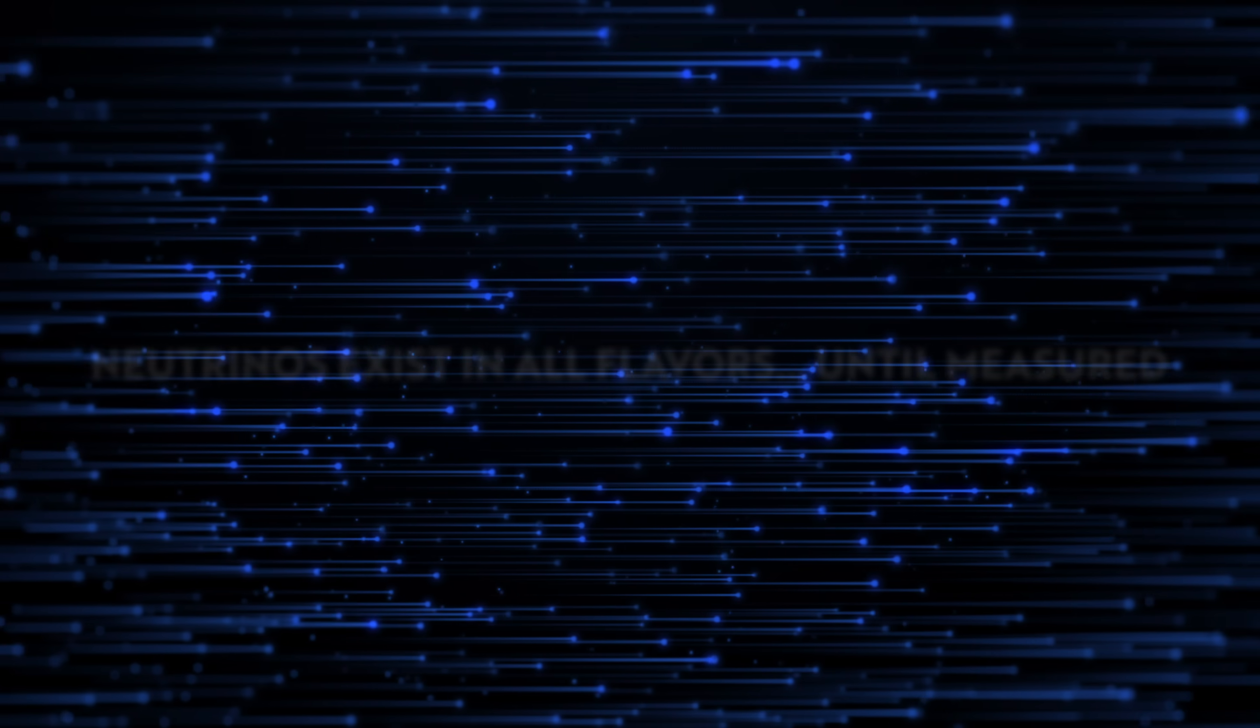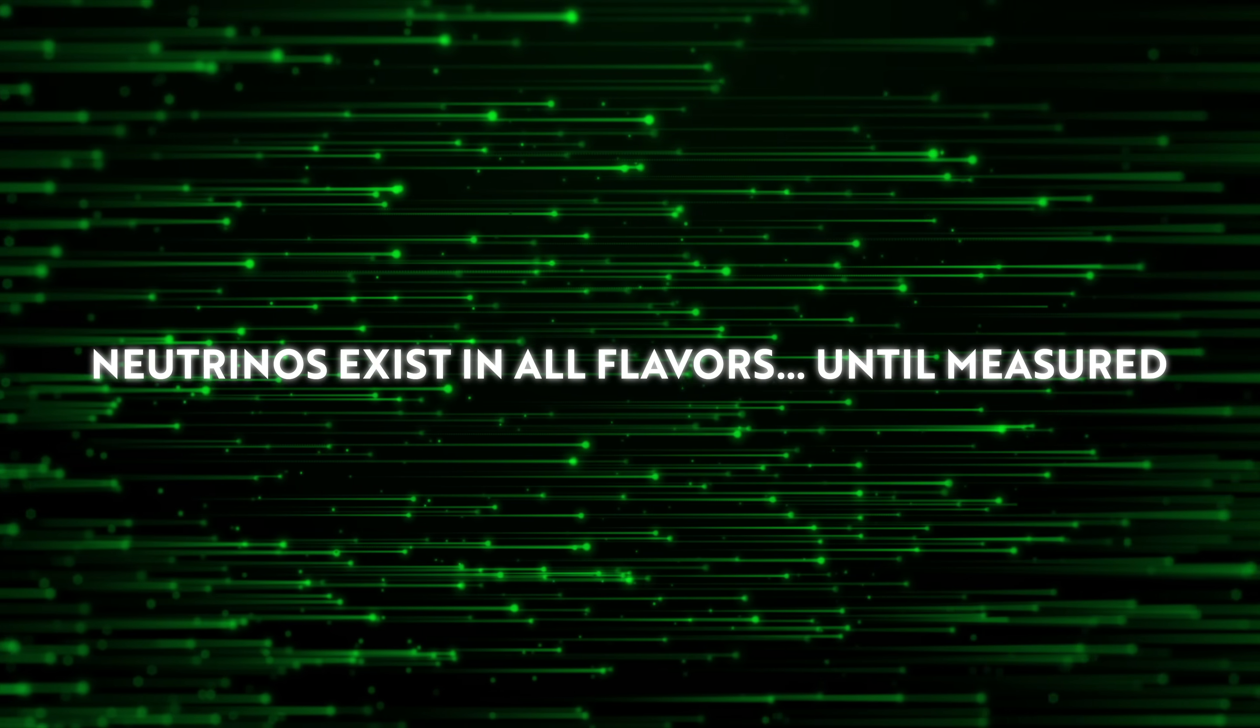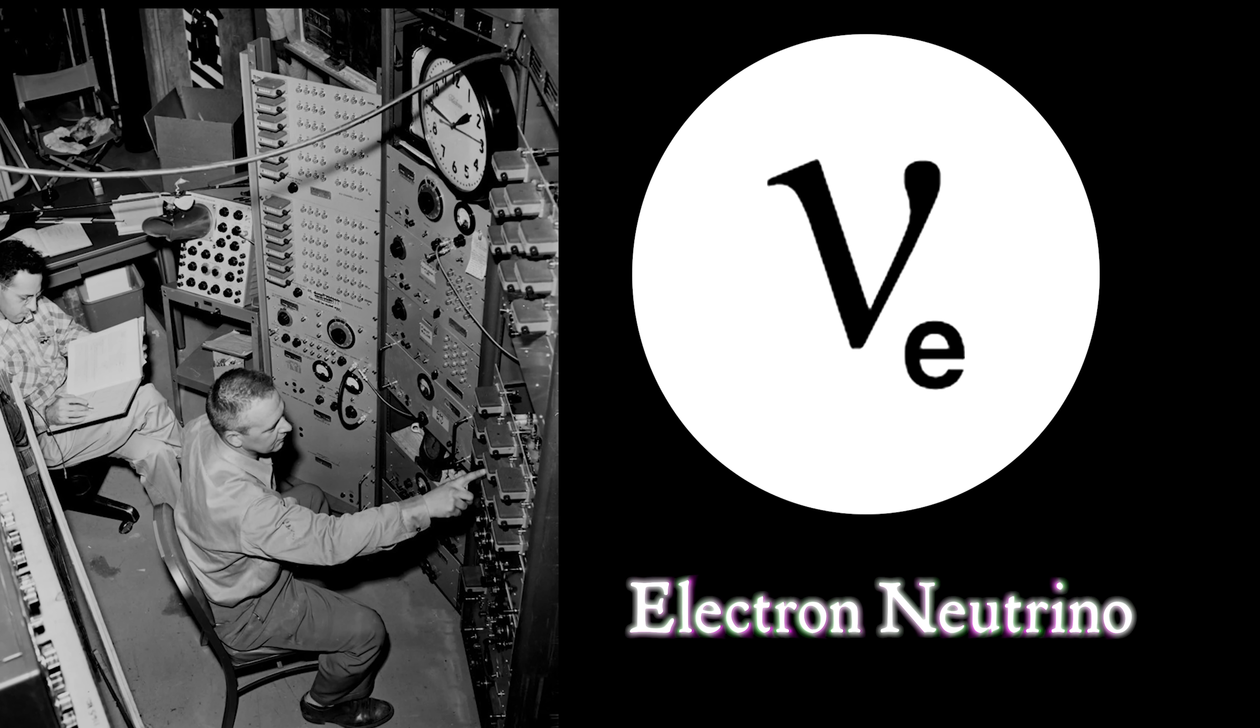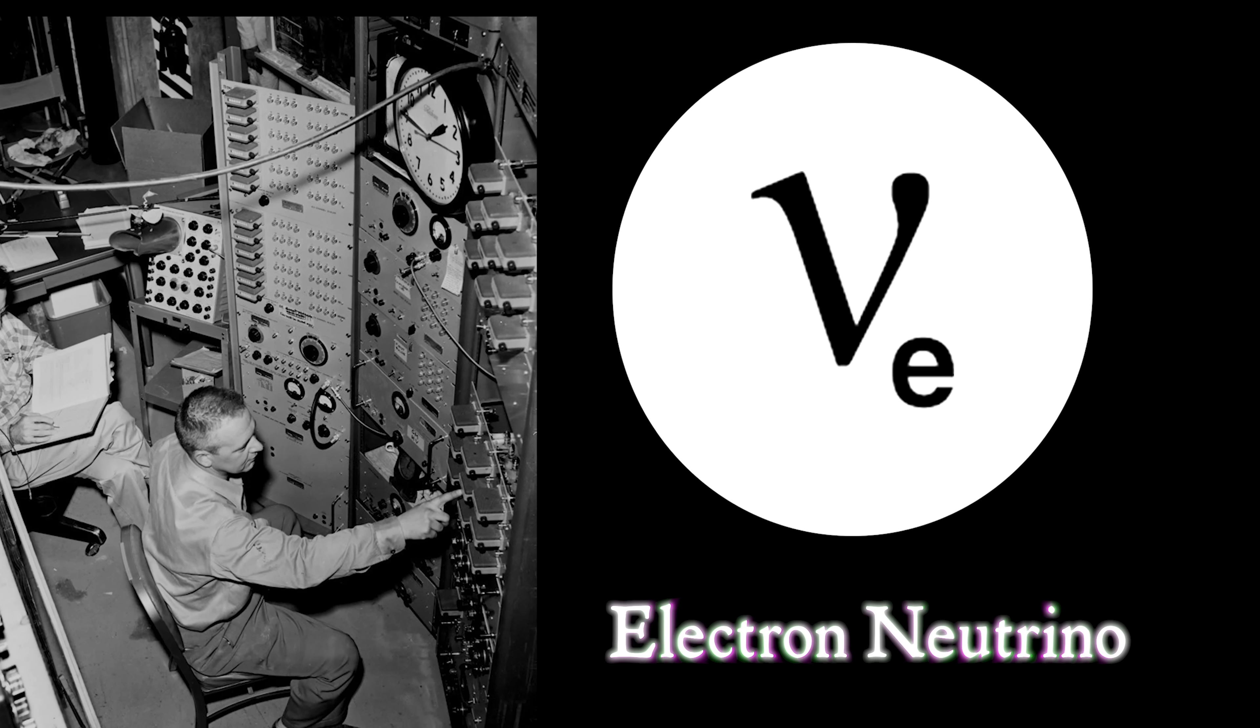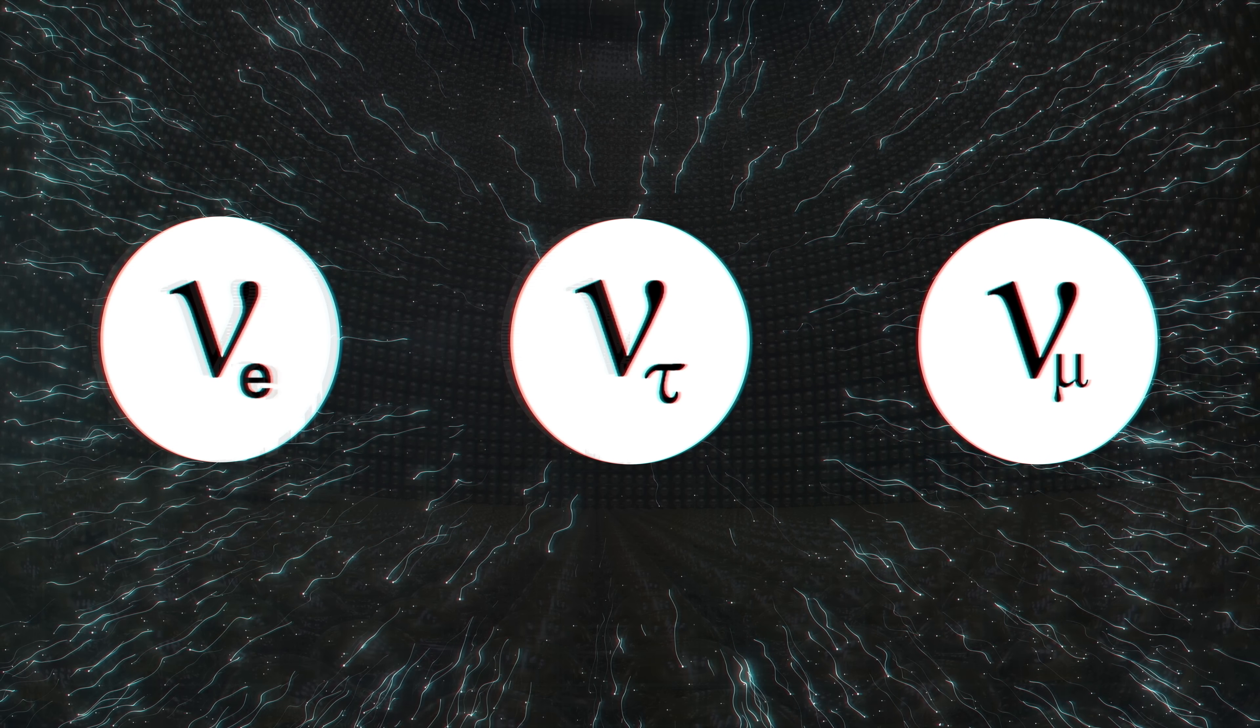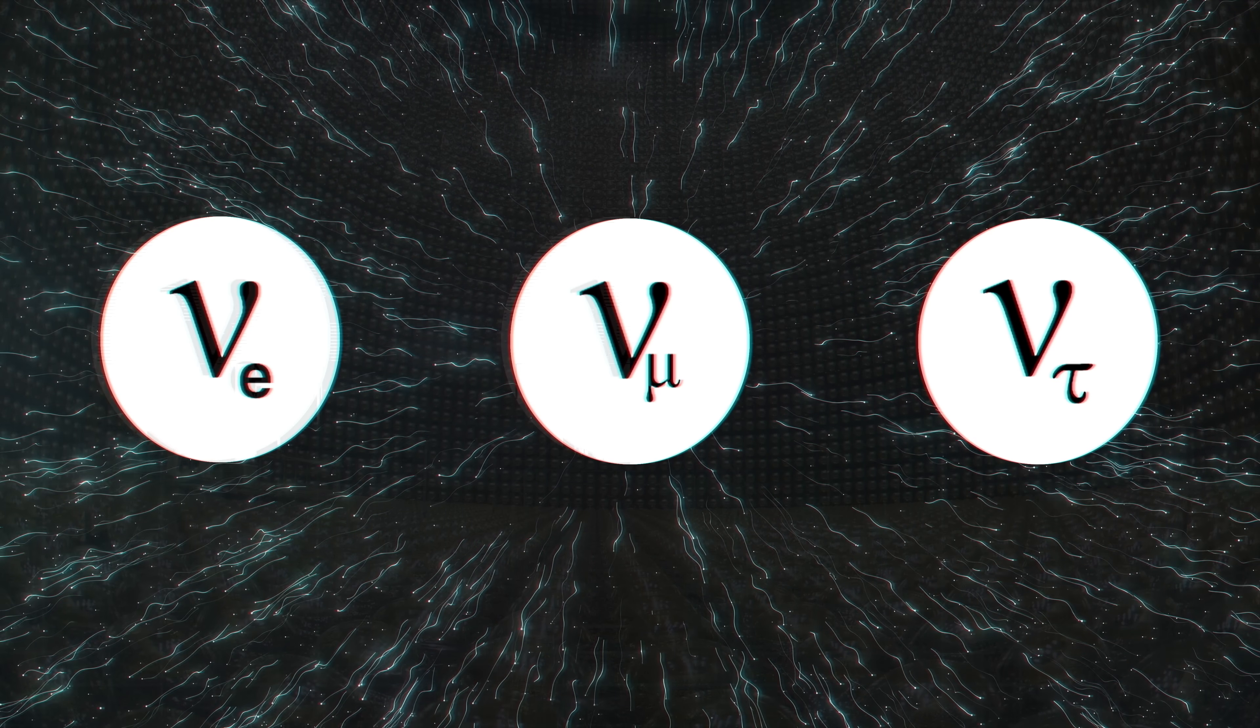Technically, all neutrinos exist in a state of superposition until they are observed, like trillions of subatomic Schrodinger's cats zipping around the universe. Electron neutrinos were the first observed variation as seen by Cowan and Rhines when measuring next to their nuclear reactors. However, in the Super Kamiokande experiment, Japanese scientists realized that neutrinos were able to oscillate or change from one flavor to another.